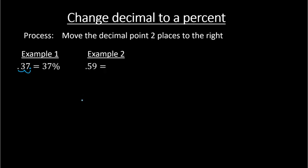Try the next examples. Example two: we have 0.59 — how would you write this as a percent? We move the decimal point over two places, which gives us 59 percent. What about example three? Here we have 3.51. Again, we move the decimal point two places to the right — over one, two places after the one — which gives us 351 percent.